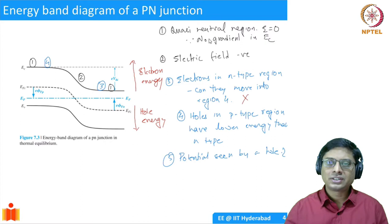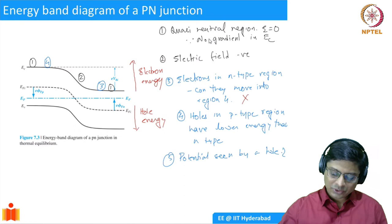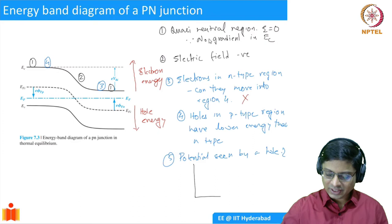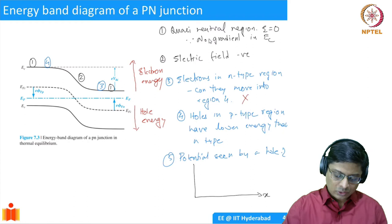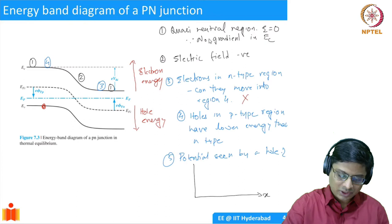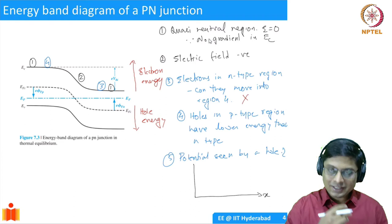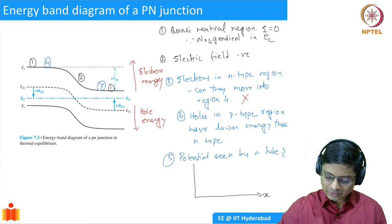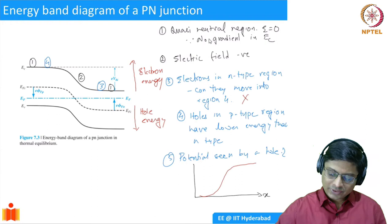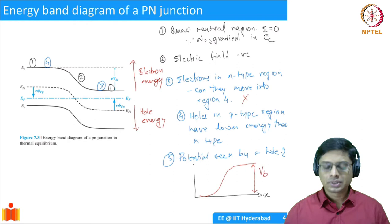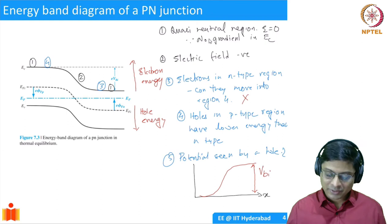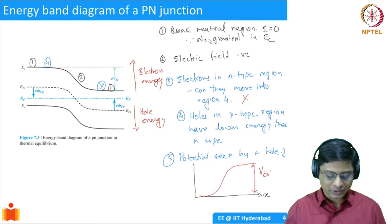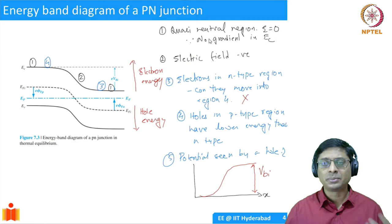We can also discuss the potential seen by a hole. Potential energy equals charge times potential. For a hole the charge is +q, so as you travel across the junction from left to right, a hole in the p-type region sees an energy barrier. This barrier in potential has a height which we call Vbi — the built-in potential. From the band diagram we can determine carrier concentrations, built-in potential, and much more.